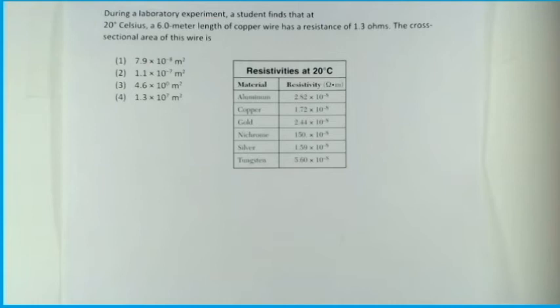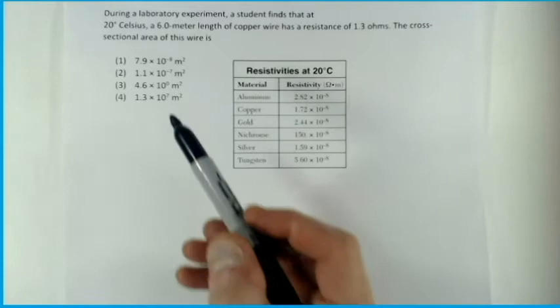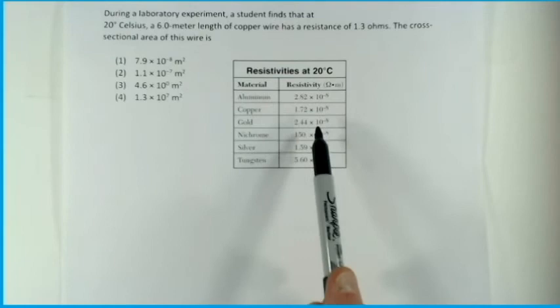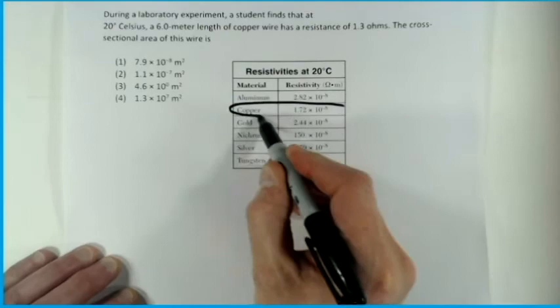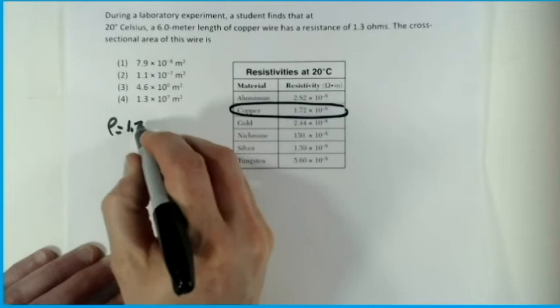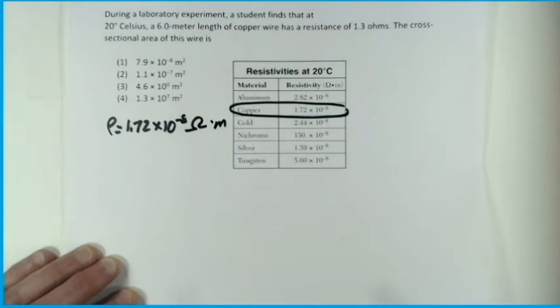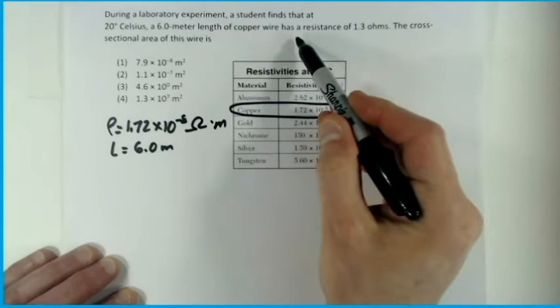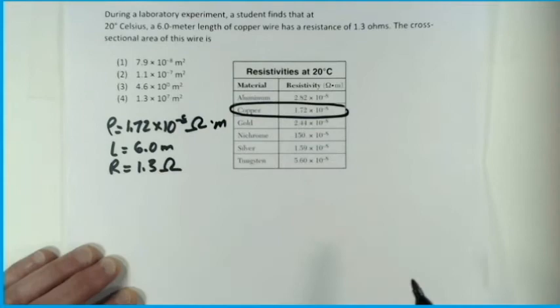For our last sample problem: during a lab experiment, a student finds that at 20°C, a 6-meter length of copper wire has a resistance of 1.3 ohms. The cross-sectional area of this wire is — four choices given. Since it says 20°C, look at the reference table. For copper: ρ = 1.72 × 10⁻⁸ ohm·meters, length L = 6.0 meters, resistance R = 1.3 ohms. We want to solve for area A.